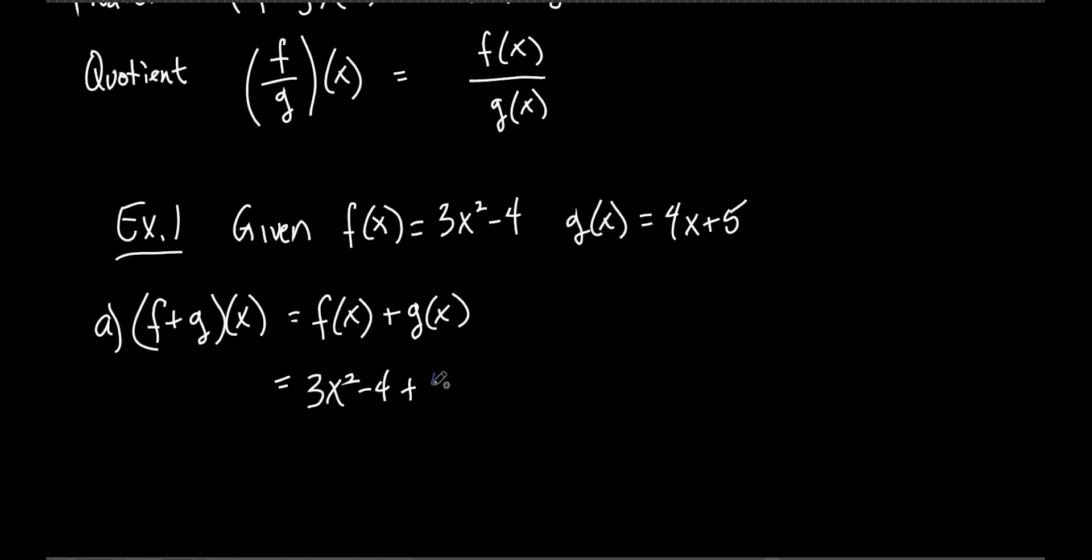3x² minus 4. Yeah, this is really easy. I mean, I think you'll find it really easy. Looks confusing with all the parentheses and the f's and the g's and the x's and all that stuff. Plus g of x. Did they tell you g of x? Yeah, 4x plus 5. And now, what do we do? Just add them up, right? So like terms, 3x² plus 4x. Really, the only math we had to do was negative 4 plus 5, which is plus 1. And that's it.